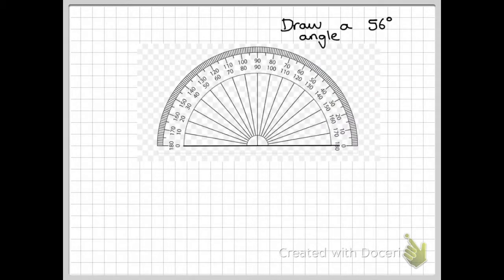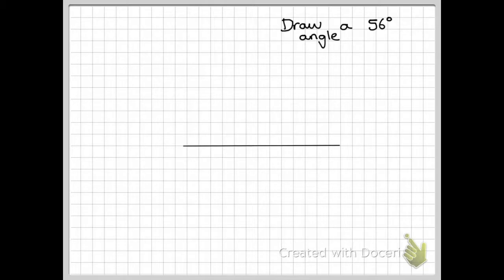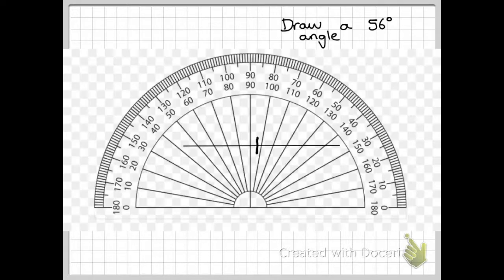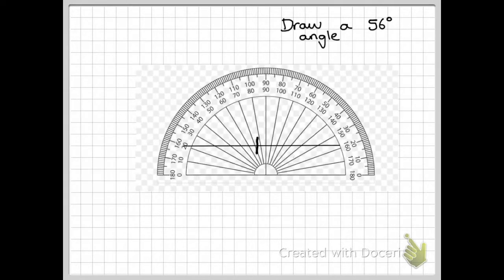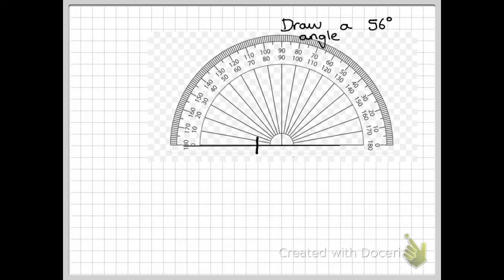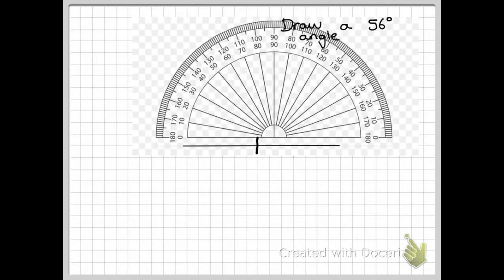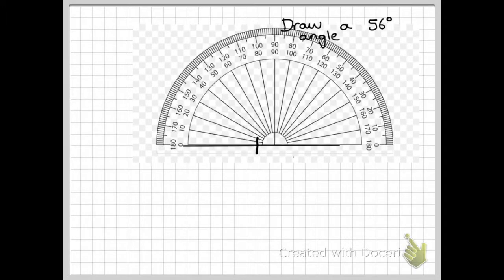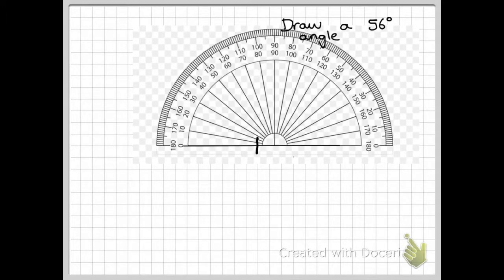So now we're going to attempt to draw an angle which is 56 degrees. The first thing you should do when wanting to draw an angle is put a mark on the straight line. So I'm going to put a mark on the straight line there. That's very important. Then I'm going to bring my protractor over, and the protractor should sit perfectly on the line. Not the edge of the protractor where the plastic is, but the last black line. That should sit perfectly on the line.